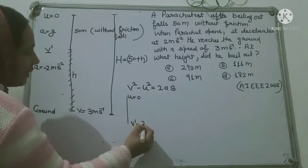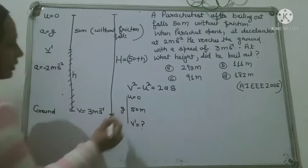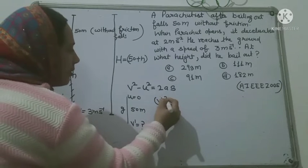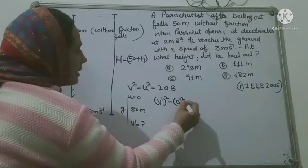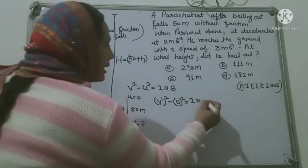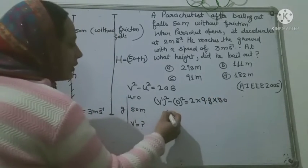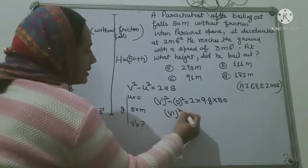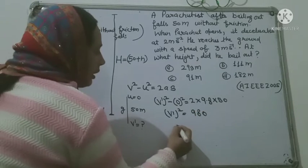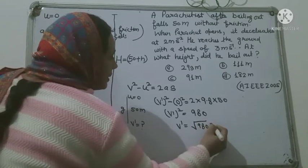V-dash हमें find out करना है. s = 50 meter, acceleration due to gravity = 9.8 m/s². लगाएं: V-dash² minus U² = 2 × 9.8 × 50. U = 0 है, तो V-dash² = 980. इसलिए V-dash = √980 meter per second.